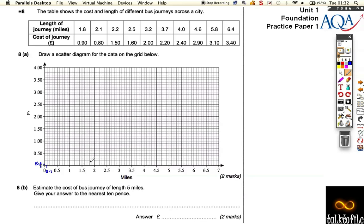So 1.8, which is 1.6, 1.7, 1.8, 3 squares above here, we've got to go to 90 pence, which is just 1 square below 1 pound. So put a point there. At 2.1, we've got to go to 80 pence. 2.1, one little square, 50, 60, 70, 3 squares above.